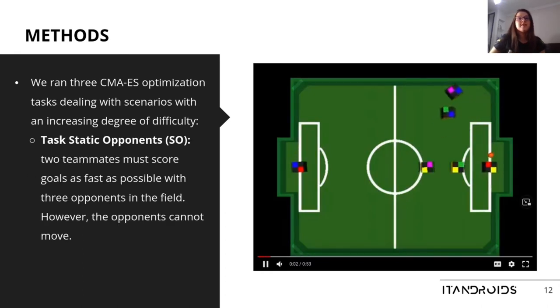The second task was the static opponents, in which two teammates must score goals as fast as possible with three opponents in the field. However, the opponents cannot move.